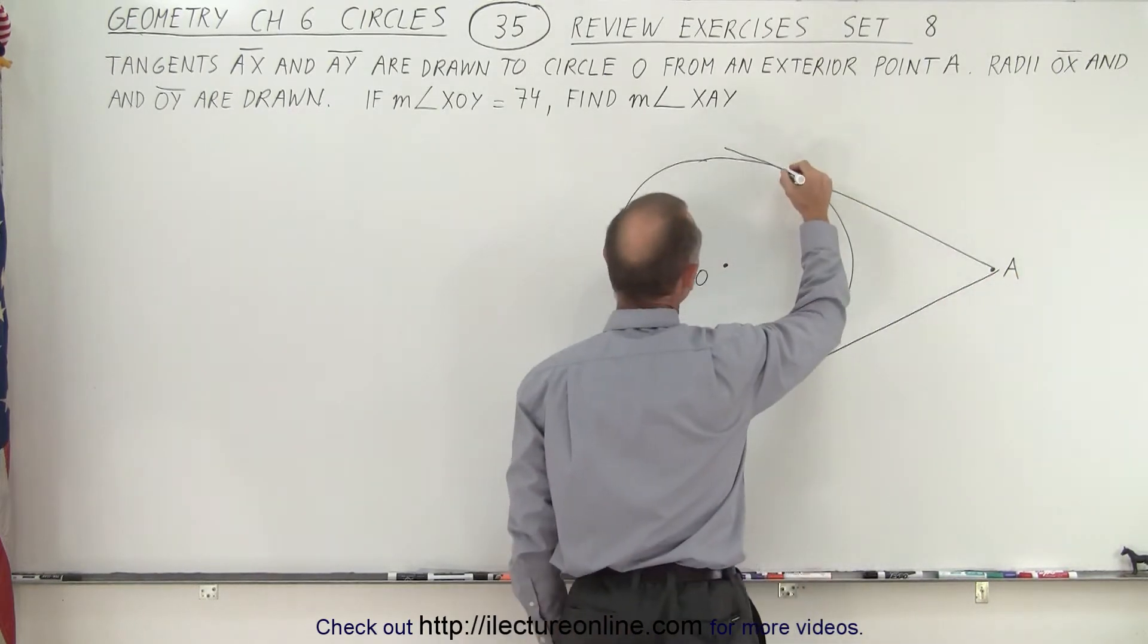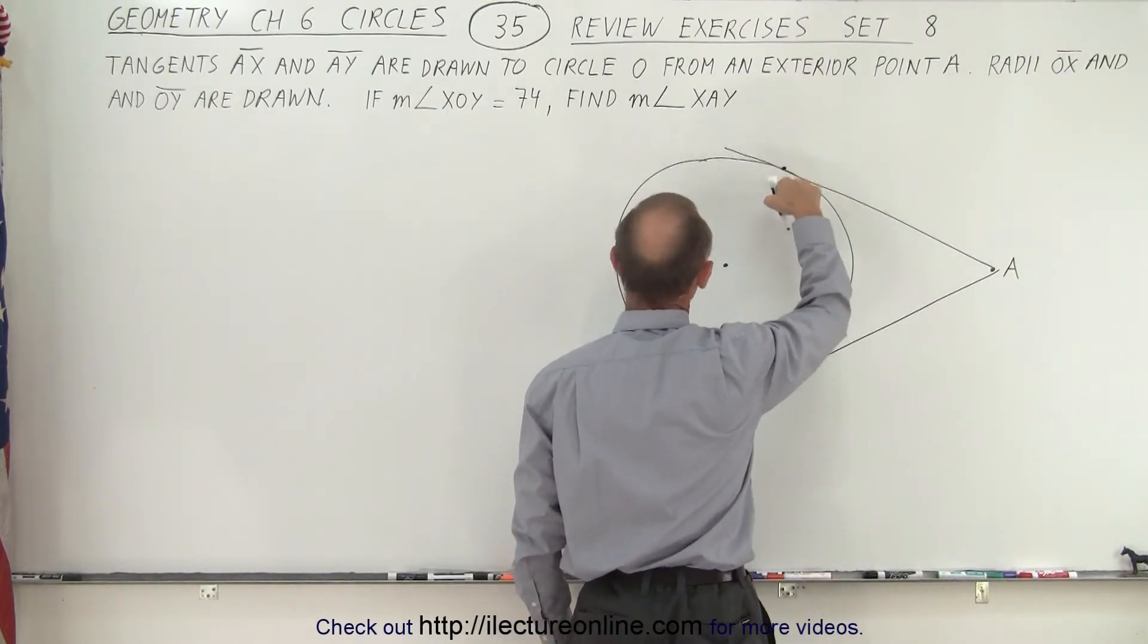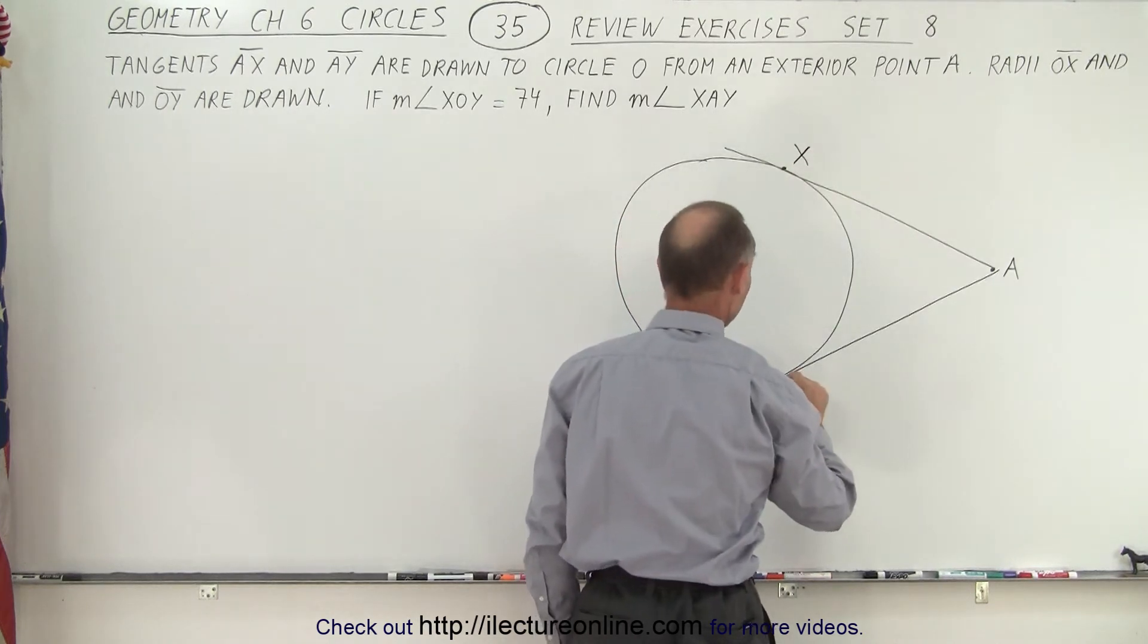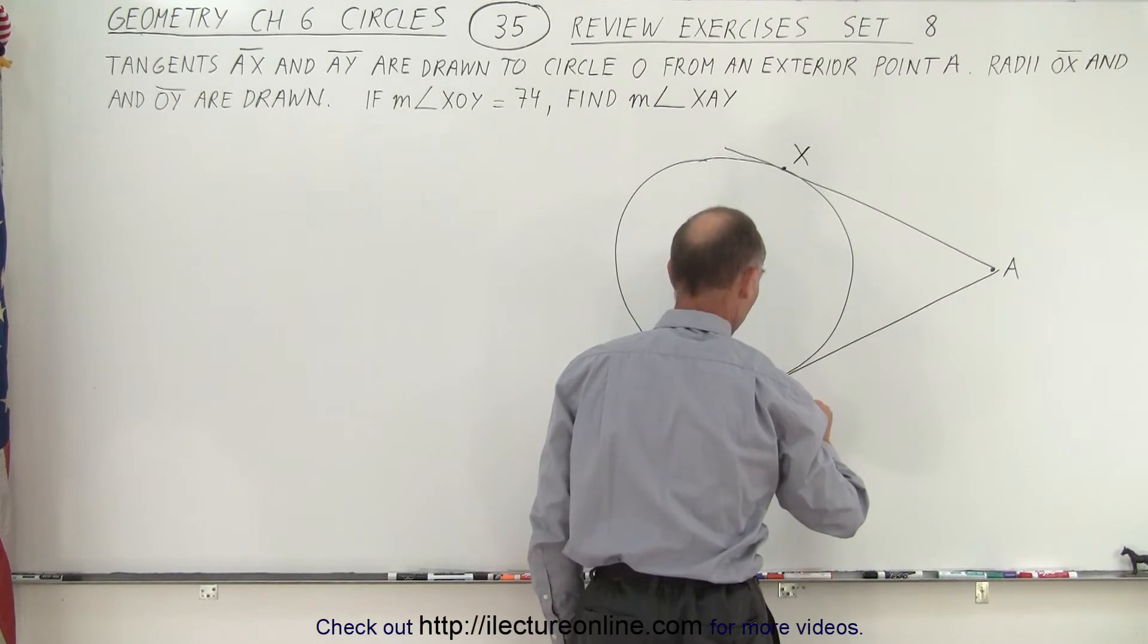Alright, so we can mark this point where the line is tangent to the circle. Let's call that point X and let's call this point where it meets the circle point Y.